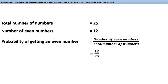What is the probability of getting a multiple of 6 up to 25? There are 4 multiples of 6, since 4 times 6 is 24. Therefore, the probability of getting a multiple of 6 is the number of multiples of 6 divided by the total — that is 4 by 25.